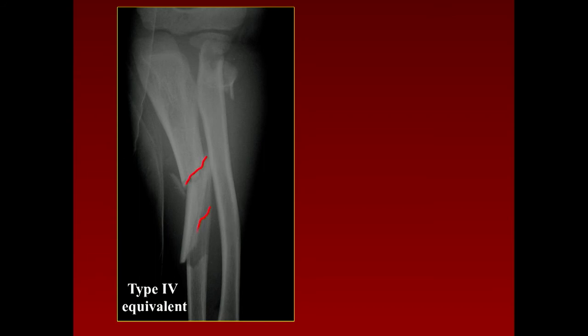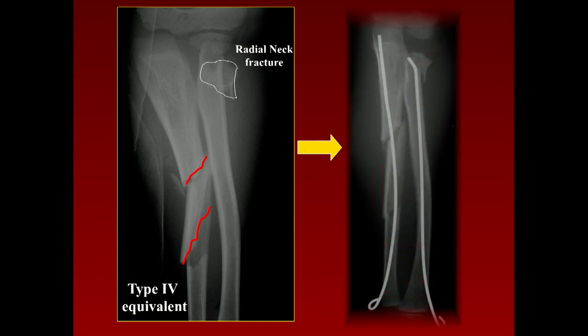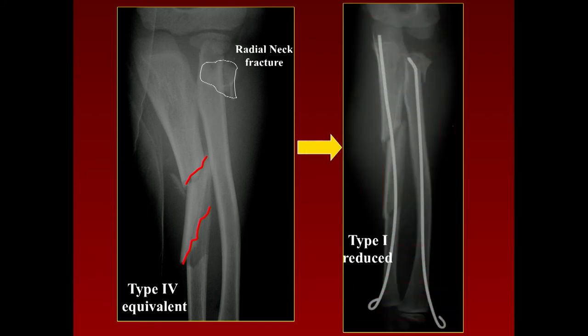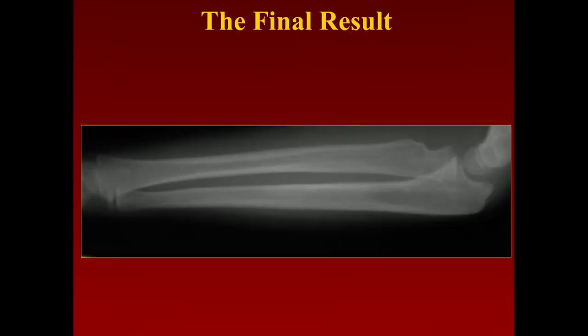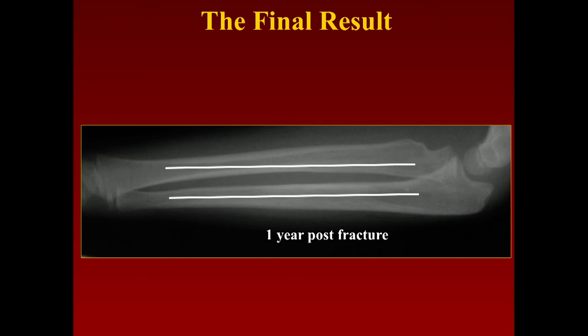Here's one done by one of my associates — kind of an equivalent. You can see two fractures of the olecranon and a fracture of the radial neck. This was treated with retrograde intramedullary nails. One year post-fracture, there was good alignment of the radial head and full supination and pronation. You can see full remodeling.